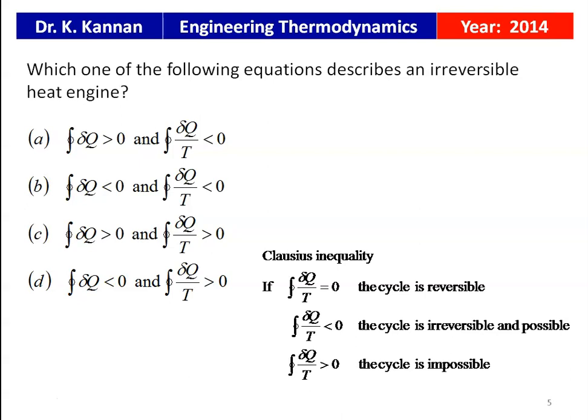From the inequality of Clausius, there are three conditions for three different types of cycles. If the cyclic integral of δQ/T = 0, the cycle is reversible. If the cyclic integral of δQ/T ≤ 0, the cycle is irreversible and possible. If the cyclic integral of δQ/T > 0, the cycle is impossible. For the irreversible process, option A is correct: cyclic integral of δQ > 0 and cyclic integral of δQ/T < 0.